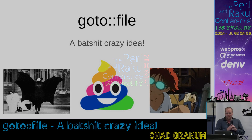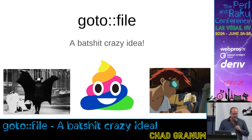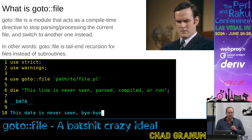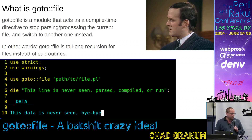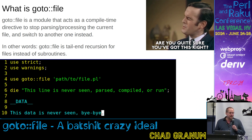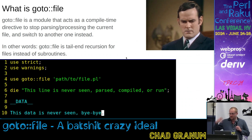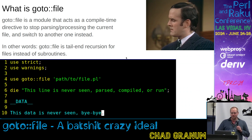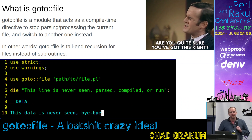Some of you have seen this talk before. This is a talk on GoToFile, an absolutely batshit crazy idea. What is GoToFile? It's basically tail-end recursion for files instead of subroutines. It basically stops parsing the current file and switches to another one without adding another stack.